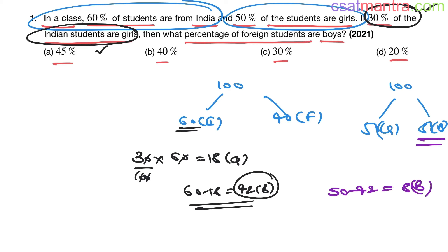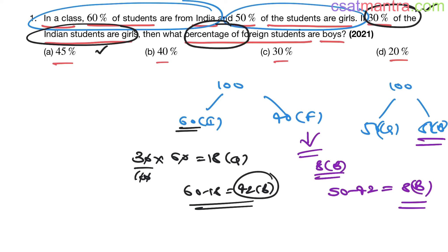We have 50 boys in total. 50 − 42 = 8 boys remaining. These 8 boys must belong to the foreign group. So 8 boys are foreign students.